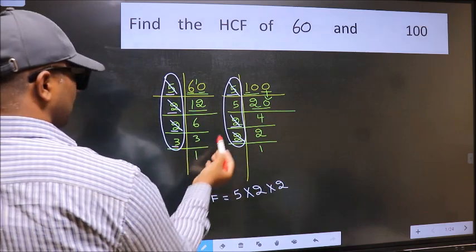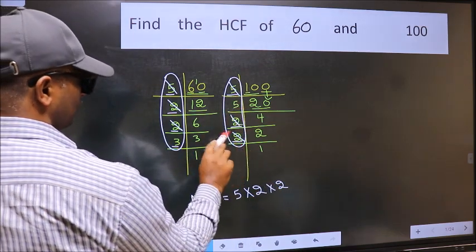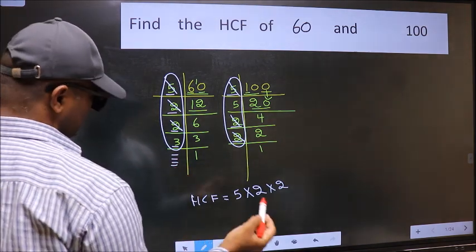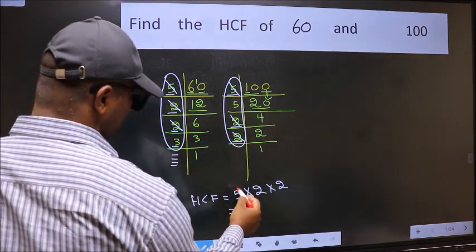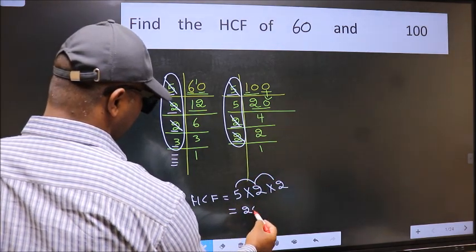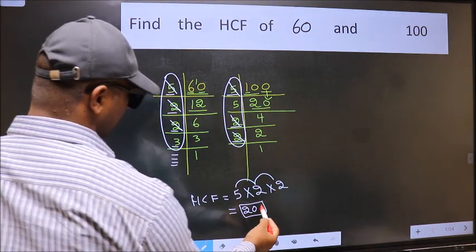Next number 3. Do we have 3 here? No. No more numbers have been left out. So our HCF is 5 times 2, which is 10, times 2, which equals 20. 20 is our HCF.